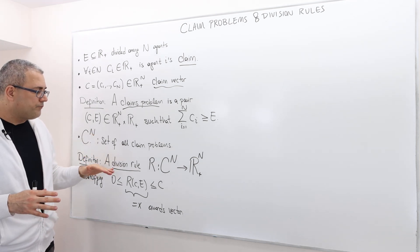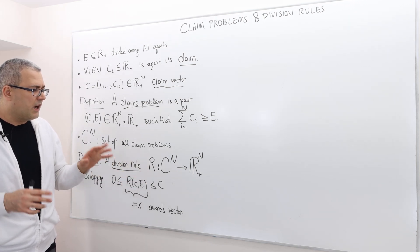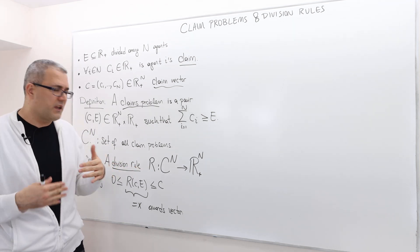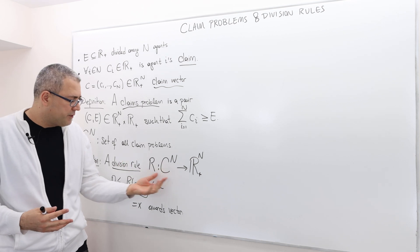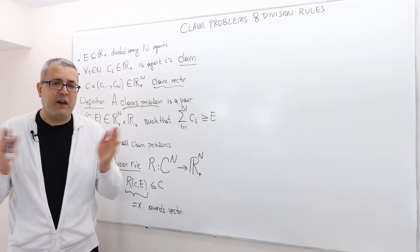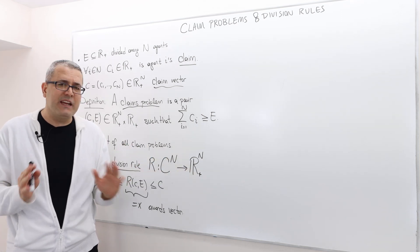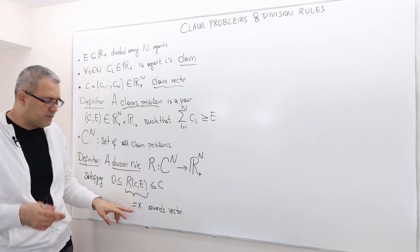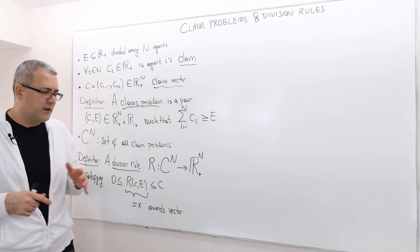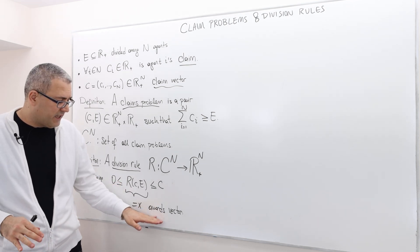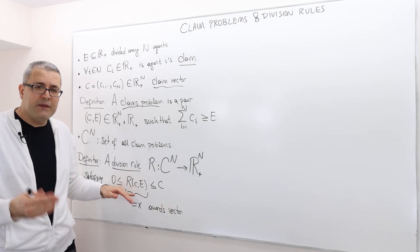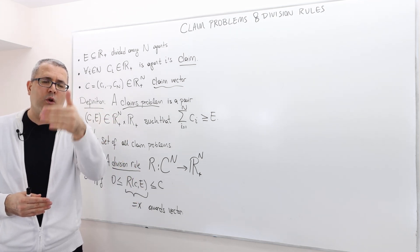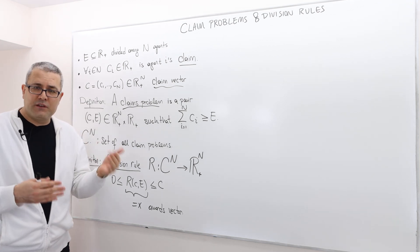So the decision rule, we are going to denote them with R. I hope it does not confuse you with the set of reals and the R. So R is a rule. For that reason, it is R. It basically maps each claim problem into a vector of n dimension, a non-negative vector of n dimension. We are going to denote this vector, sometimes R, C, E, sometimes X. But don't forget, this is a vector. Meaning, and we call this X as the awards vector, or R, C, E as the awards vector. It basically tells us how much agent 1, agent 2, all the way up to agent n gets after this rule.